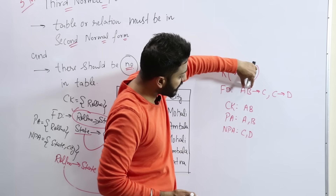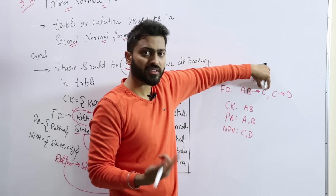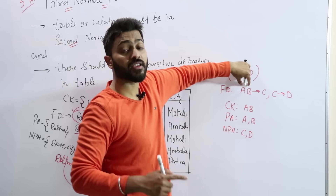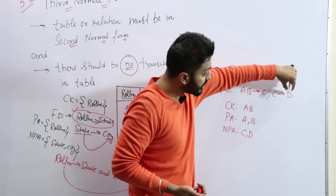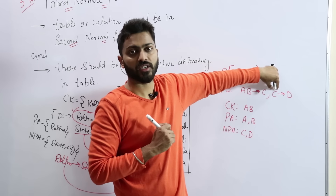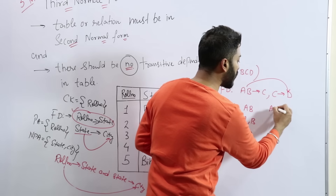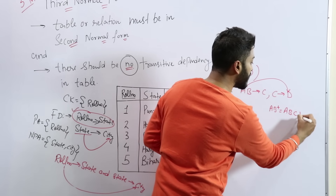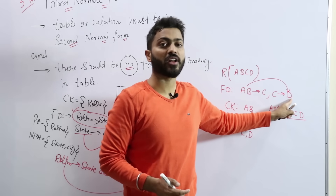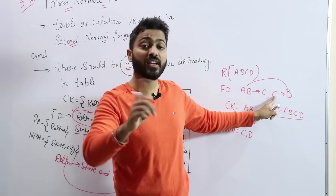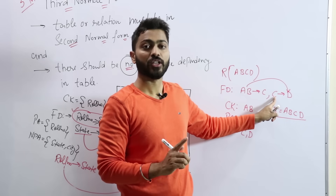Now check: AB is the candidate key determining C (a non-prime attribute) — this is possible and valid because a non-prime attribute is being determined through the candidate key. But for C → D: D, which is a non-prime attribute, is being determined by C, which is also a non-prime attribute. This is the problem. Because of the transitive property, AB is also determining D through C, and C is a non-prime attribute. So this is the biggest flaw — a non-prime attribute determining another non-prime attribute — this should not be there.